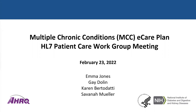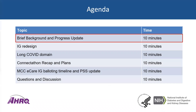Here's our agenda for today: a quick progress update, since the last time we met on this was at the beginning of December — so it's been two months. Then Gay will talk about the IG redesign, Emma will give an update on the long COVID domain data element identification process, we'll discuss connectathon items, and then we have some updated proposed timing for the balloting, which will also require a PSS update, followed by time for questions.